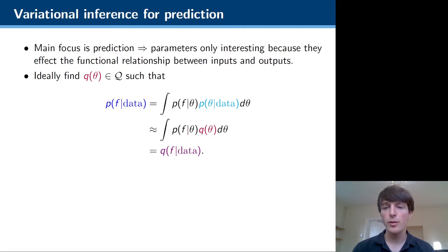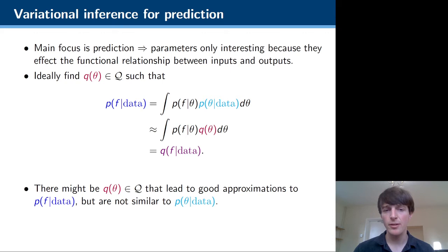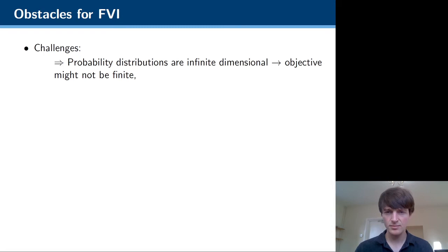And if that's the case, even if our model is parameterized, we really want to find a distribution over parameters so that we end up with a similar predictive distribution. And in cases where your model is non-identifiable, it could be quite different. So there could be distributions over parameters which aren't really similar to the posterior distribution over parameters, but still induce good predictive distributions.